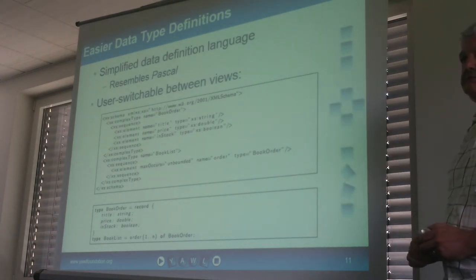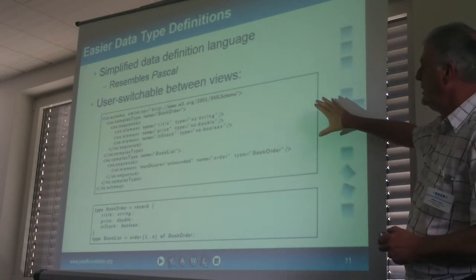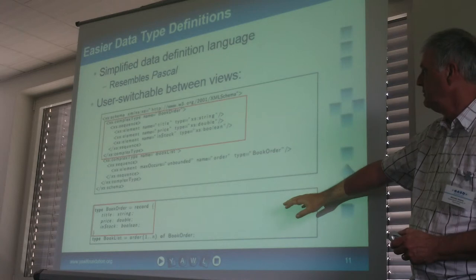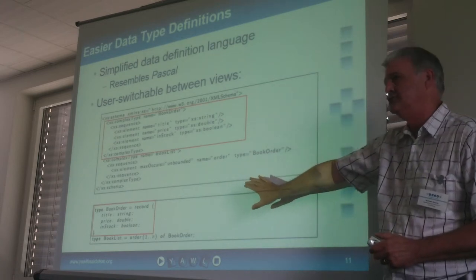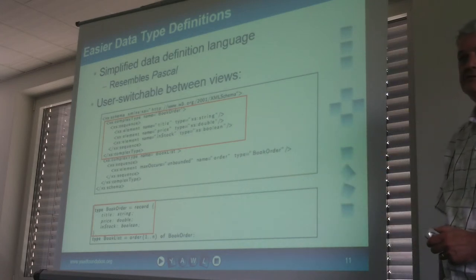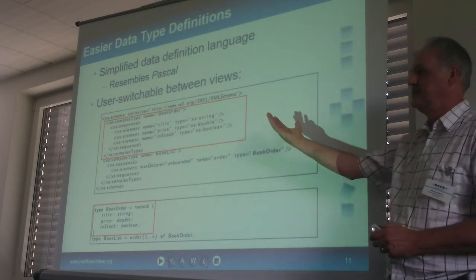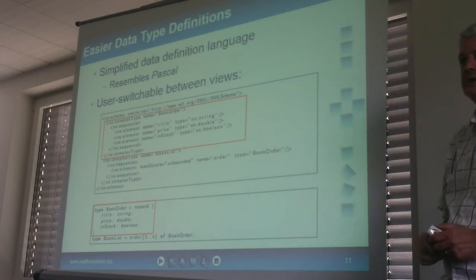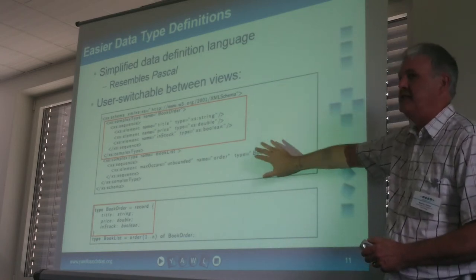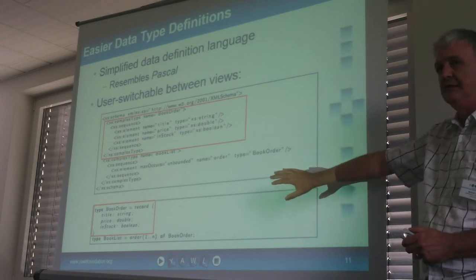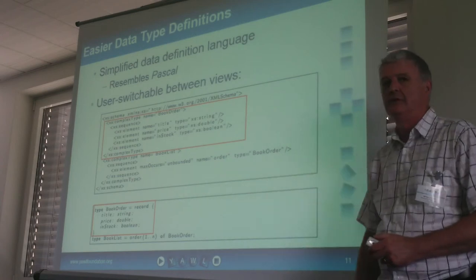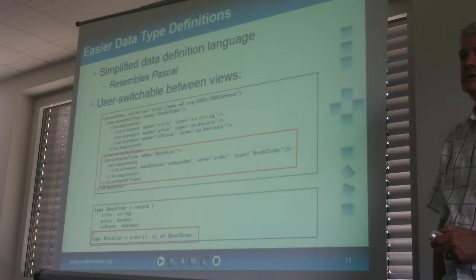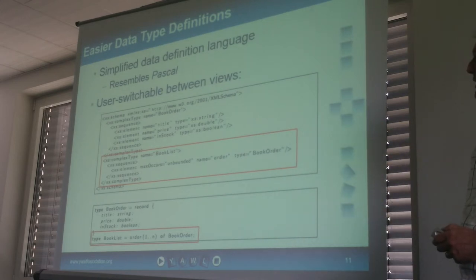There's also a simplified data definition language for novices, where a Pascal-like language can be used to define data types. So an XML Schema construct becomes an equivalent construct in this simpler definition language. It'll be switchable — if you want to switch to the XSD definition go right ahead, or if you want to write it in the simple format, you can use that instead. We're not going to try to cover everything you can do in XSD, but for the novice user most things they need will be describable in a simple window. And these definitions are reusable between and across specifications.